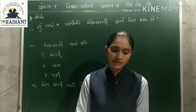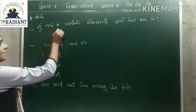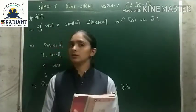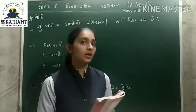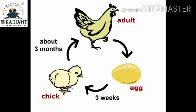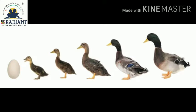તો આપણે શું સોધવાનું છે તેના વિષે જોઈએ. શું બધા જ પ્રાણીઓ એક સરખી ઝડપે મોટા થાય છે? ના, બધા જ પ્રાણીઓ એક સરખી ઝડપે મોટા થતા નથી. દરેકનો વિકાસનો ક્રમ અલગ અલગ હોય છે. ઉદાહરણ તરીકે, મરઘીનું બચ્ચું જન્મે છે અને ત્રણ અઠવાડિયા પછી તે મરઘી બને છે. આ રીતે ધીમે ધીમે તેનો વિકાસ થાય છે. આ રીતે અલગ અલગ રીતે બધા જ પ્રાણીઓ અને પક્ષીઓનો વિકાસ આપણને જોવા મળે છે.